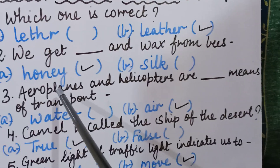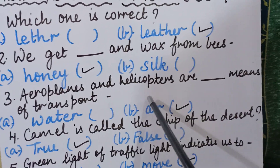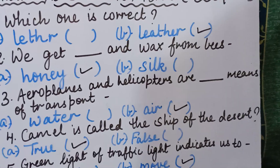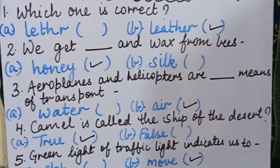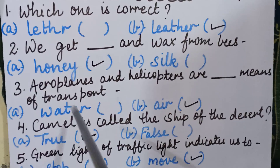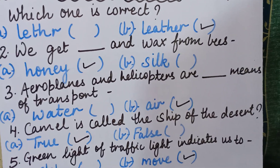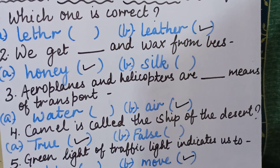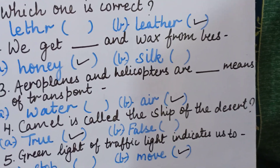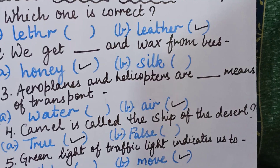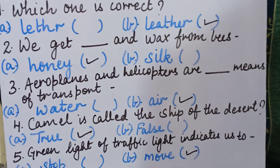Third question: aeroplanes and helicopters are dash means of transport — water or air? Aeroplanes and helicopters fly up in the sky, in the air. So they are air transport. We will put a tick in front of air.